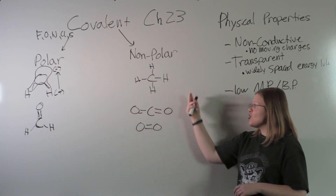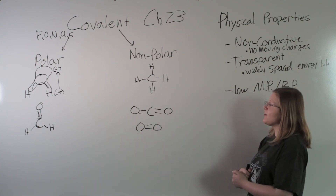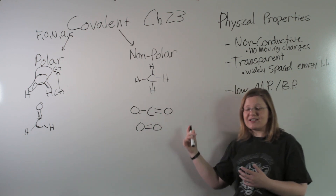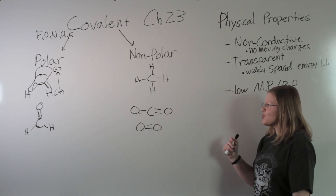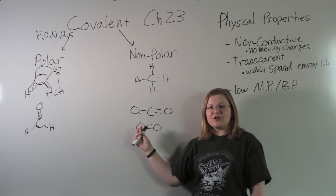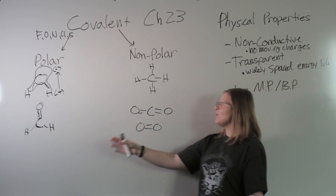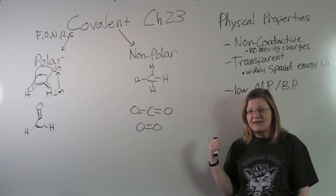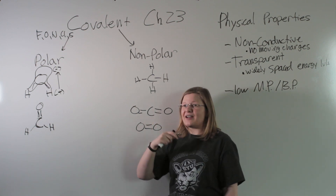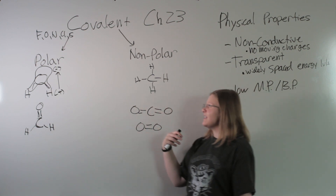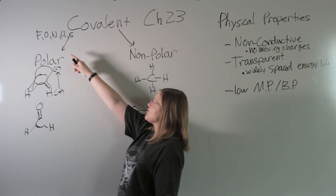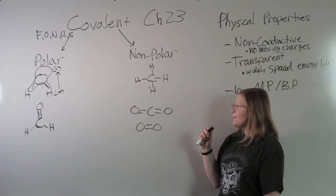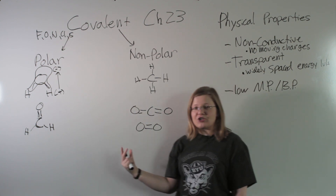Nonpolar molecules are molecules in which there is an equal distribution of electrons. There are two things to look for when deciding whether a molecule is polar or nonpolar. One is: do I have really electronegative atoms? Fluorine, oxygen, nitrogen, chlorine, or sulfur tend to be very electronegative. If you have those in your molecule, there's a good chance it's polar.